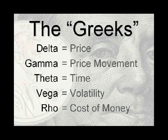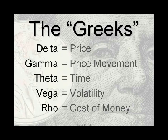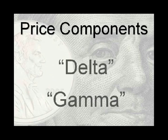We're going to start by mentioning the Greeks. There are five Greeks in options pricing: delta, gamma, theta, vega, and rho. My famous joke is that vega is not a Greek — it's a Chevrolet. Each one deals with a certain aspect of options pricing. I like to say that any position we have has a Greek footprint, and the five Greeks represent one of the toes: delta is price, gamma is price movement, theta is time, vega is volatility, and rho is the cost of money.